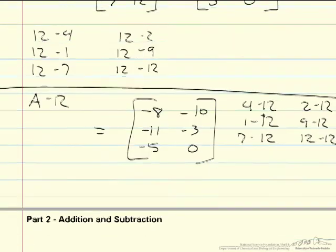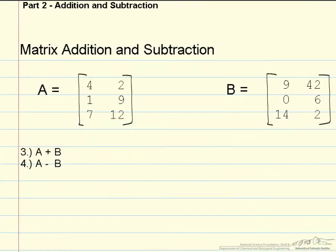The next part is matrix addition and subtraction, and this is where you are adding and subtracting two whole matrices. One of the most important things to remember about this is that you need two matrices that are the exact same size. Both of these matrices are 3 by 2.